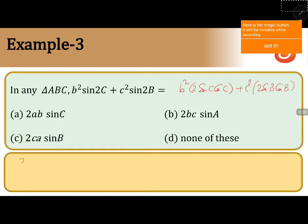Now, 2b square sin c, you write c by 2r cos c plus 2c square b by 2r cos b.